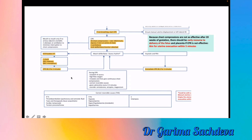During CPR, establish IV access, give high flow oxygen, intubate, give continuous chest compressions, correct reversible causes, give adrenaline every 3 to 5 minutes, and consider amiodarone, atropine, and magnesium. Attach a defibrillator and assess rhythm. There are only two shockable rhythms: ventricular fibrillation and pulseless ventricular tachycardia. For asystole and pulseless electrical activity, do not give shock. For shockable rhythms: give one shock at 200 joules if biphasic or 360 joules if monophasic, then continue CPR for two minutes and reassess.